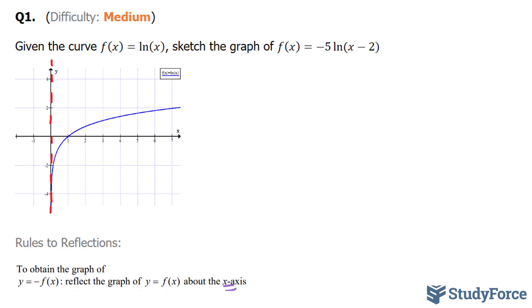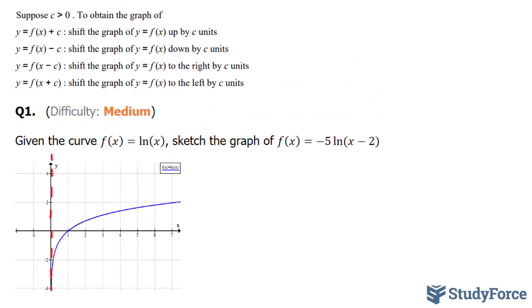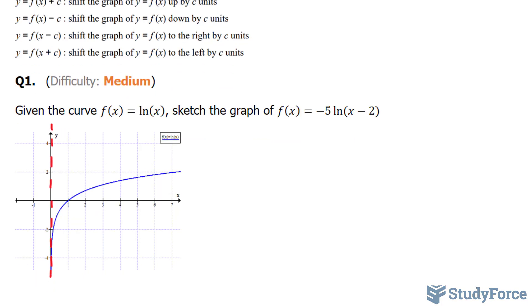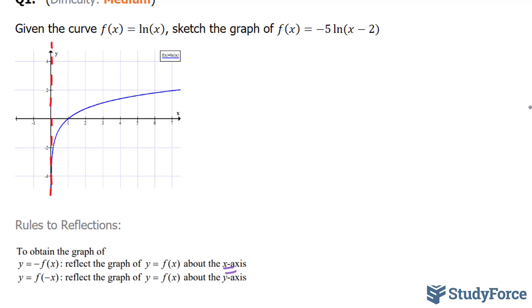The first transformation that we'll focus on is this one right here, where you have x minus 2. And according to the chart above, if your x is being subtracted by a value, you shift every x coordinate along the curve to the right by that value. So for example, this point right here is (1, 0). The x coordinate is 1, so you shift that to the right. This point becomes this point right here. This point becomes that point, and you get the idea.